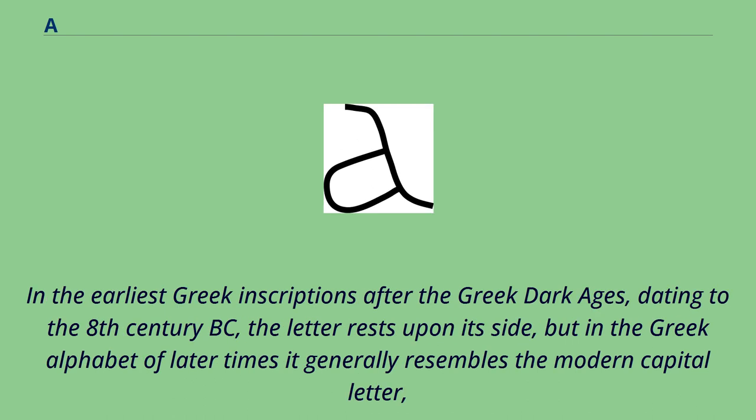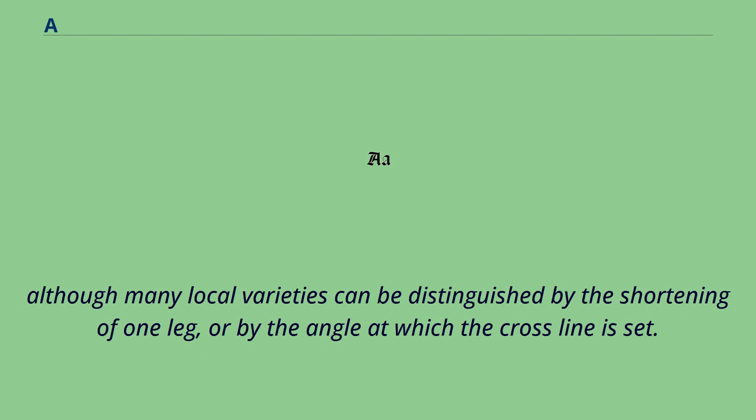In the earliest Greek inscriptions after the Greek Dark Ages, dating to the 8th century BC, the letter rests upon its side, but in the Greek alphabet of later times it generally resembles the modern capital letter, although many local varieties can be distinguished by the shortening of one leg, or by the angle at which the crossline is set.